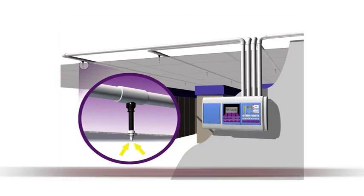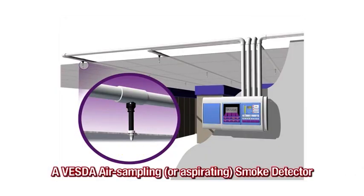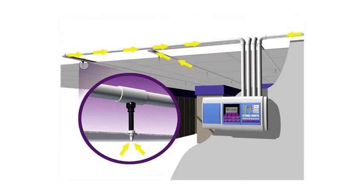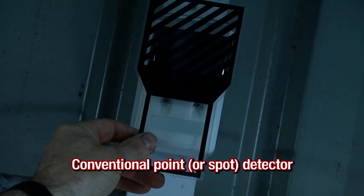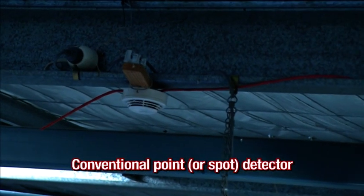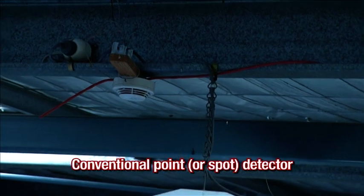The first detector is a VESDA air sampling or aspirating smoke detector, which uses a network of pipes to continually draw air into the detector from a protected area. The second detector is a beam detector and the third is a conventional point or spot detector.